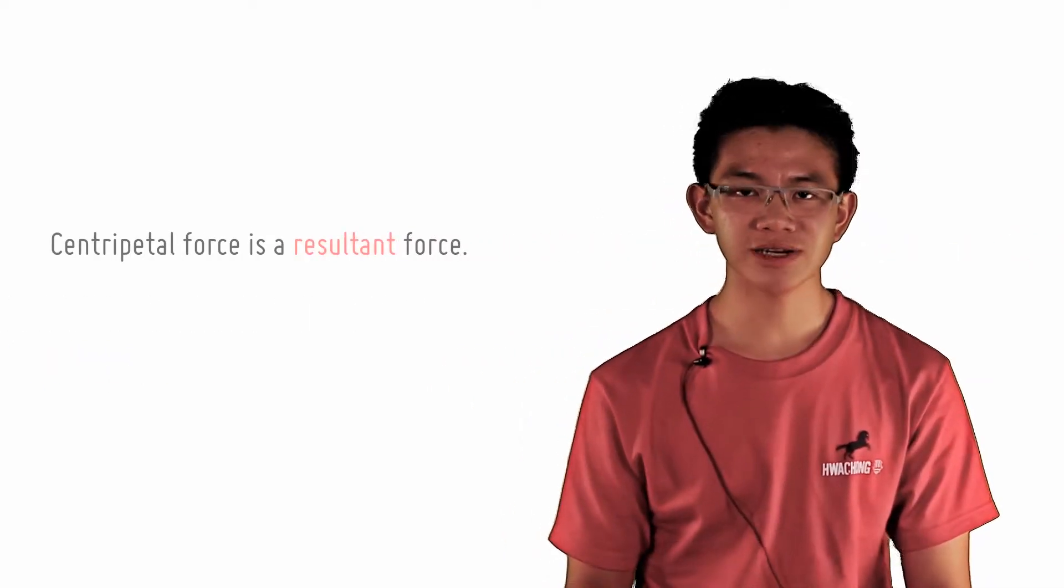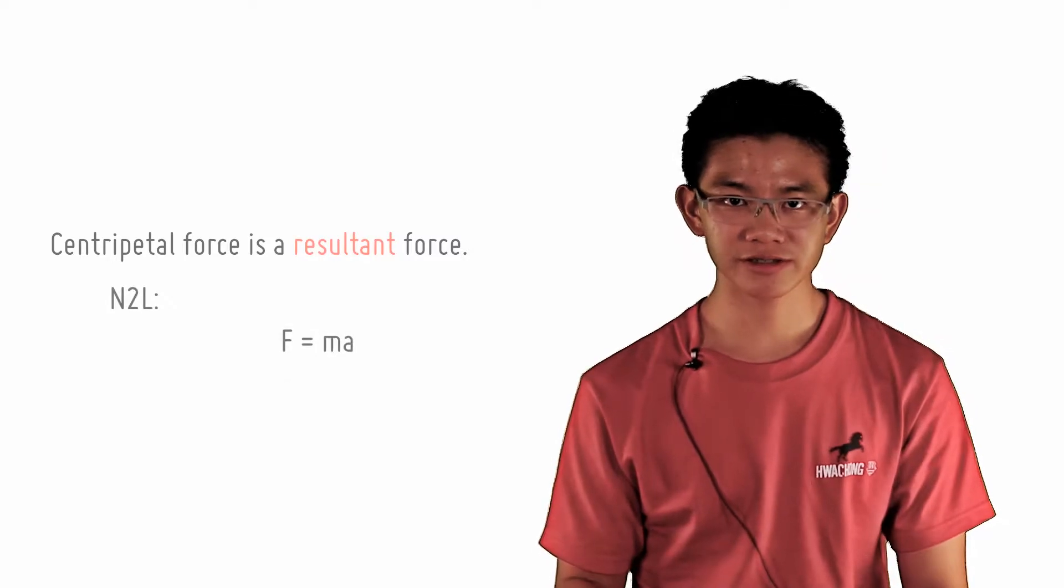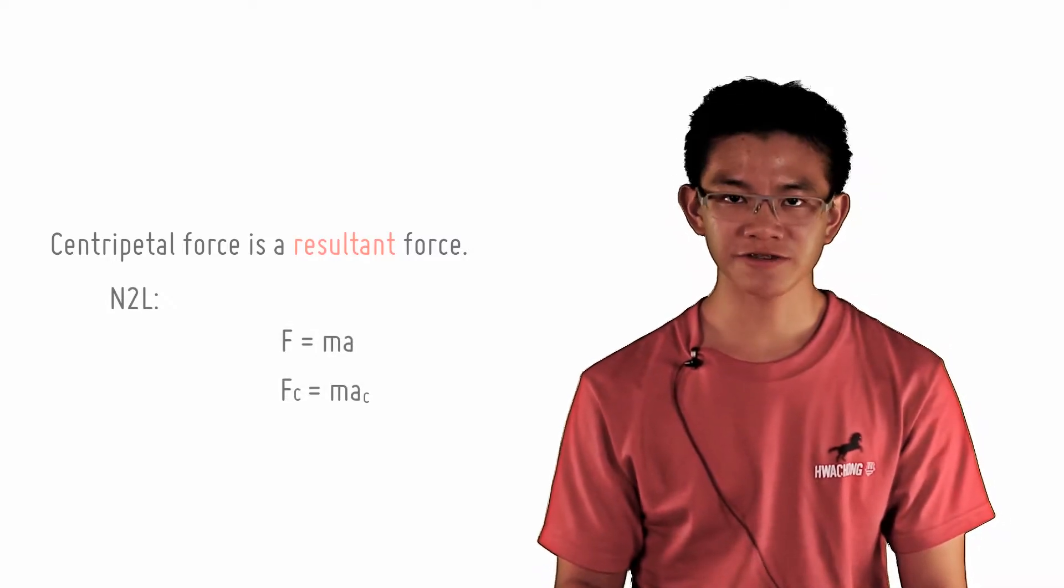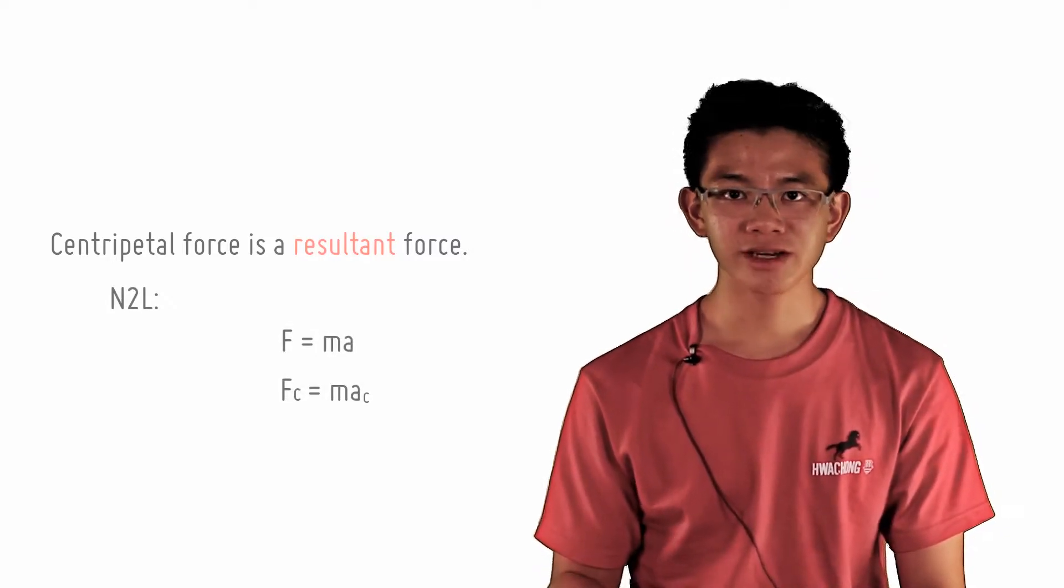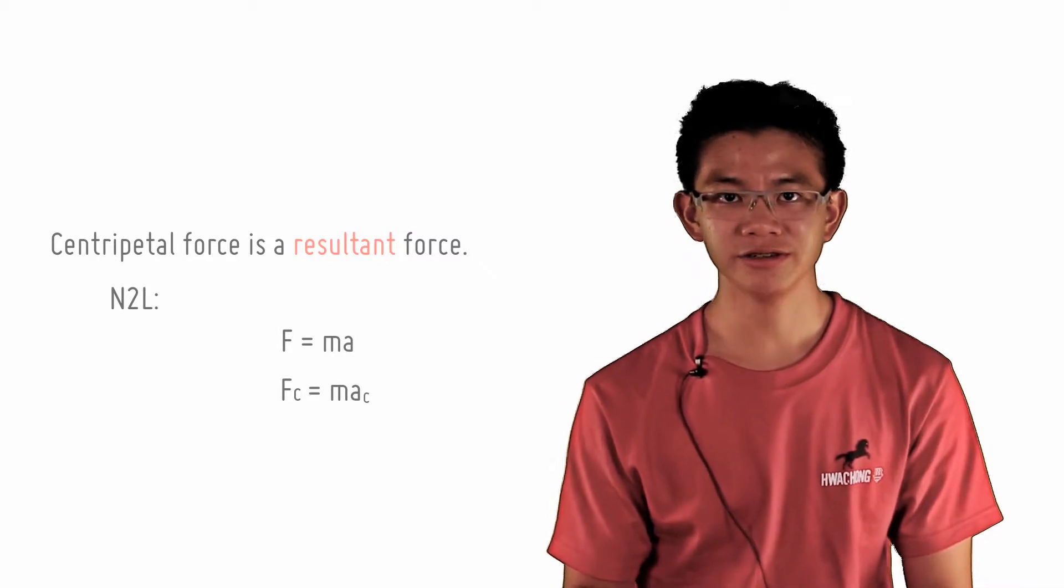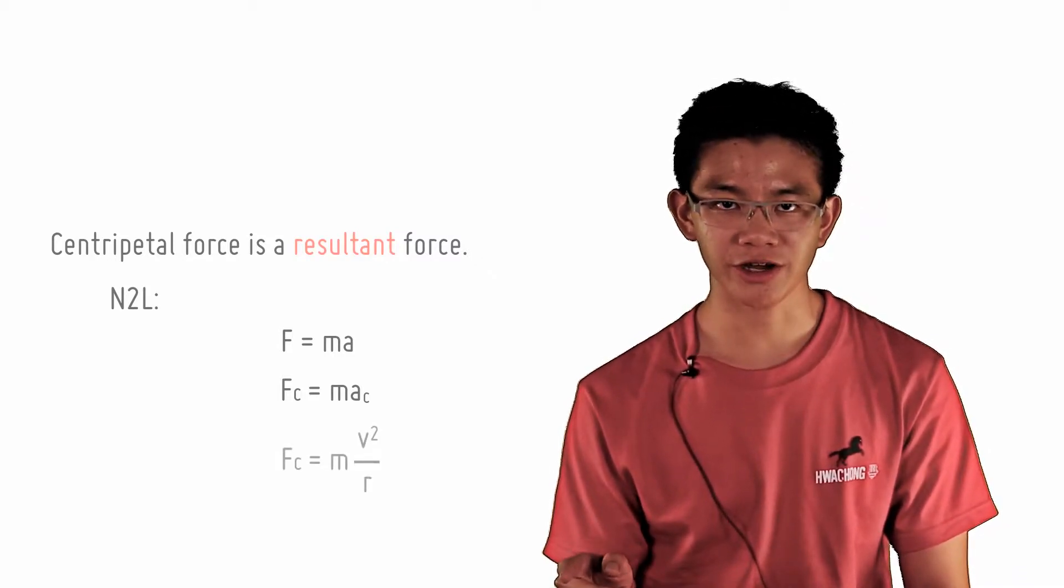Remember that centripetal force is a resultant force, and by Newton's second law, F equals ma. So the centripetal force is equal to m times the centripetal acceleration, which is equal to mv squared over r.